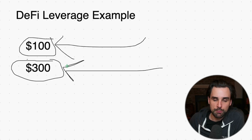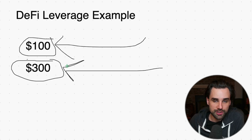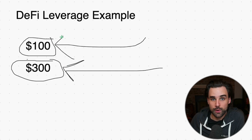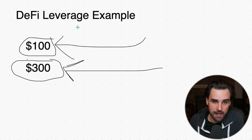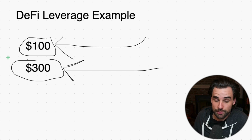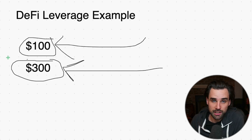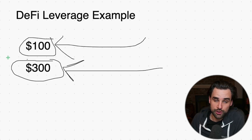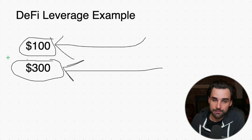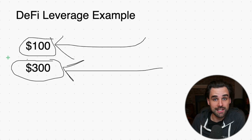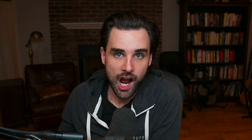So let's say a protocol lets you get 100% APY on your deposit. You could turn around and turn that into 300% APY if you increase your exposure with flash loans. There are, of course, lots of risks associated with this because you could face liquidation if you use too much leverage and the rates change on you. But that's the power of using a flash loan in this case.